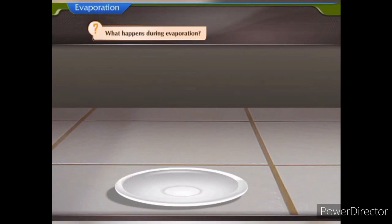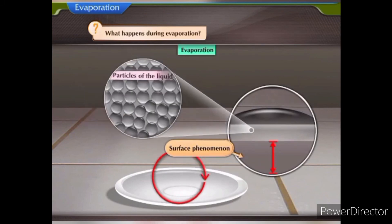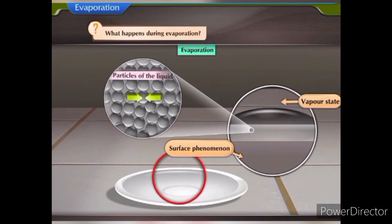The process of a liquid changing into vapour or a gas below its boiling point is called evaporation. Evaporation is a surface phenomenon. Particles of the liquid on the surface gain energy to overcome the forces of attraction present in the liquid and change into the vapour state, causing evaporation.